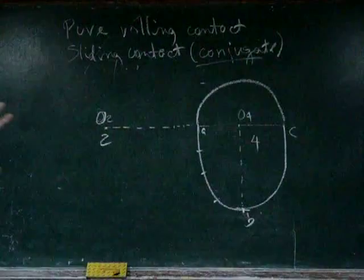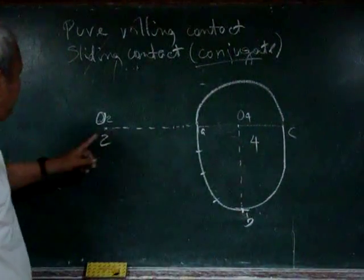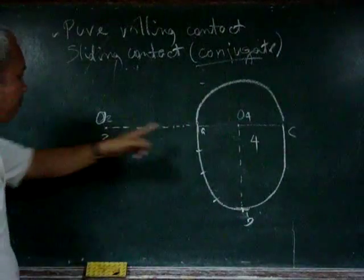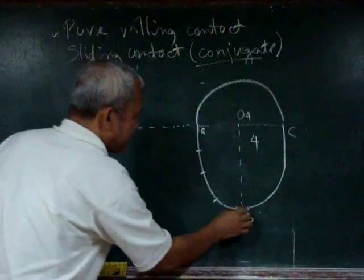Let us draw the shape of body 2, which is in pure rolling contact with body 4 at points A, B, C.